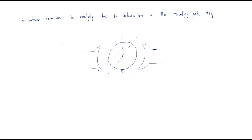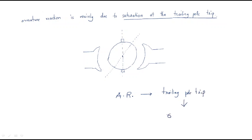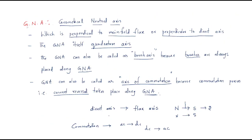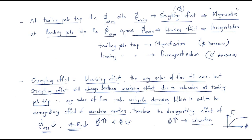Therefore, armature reaction is mainly due to saturation at the trailing pole tip. Due to the trailing pole tip, the flux will decrease. These are the important points of armature reaction — GNA, MNA, and the magnetization and demagnetization effects. I hope all of you understand the session. Thank you.